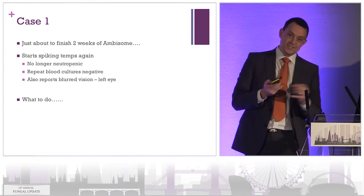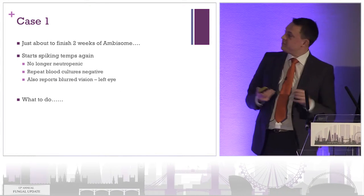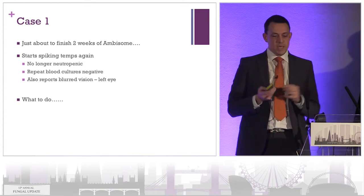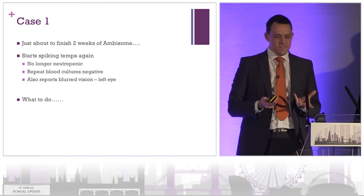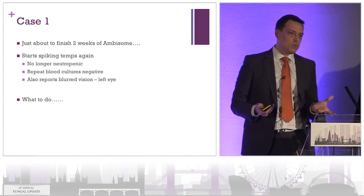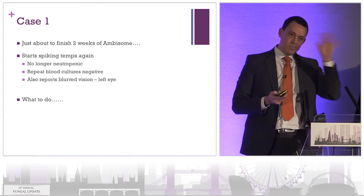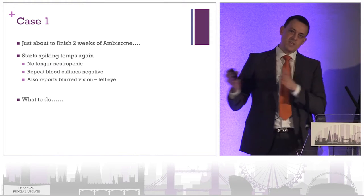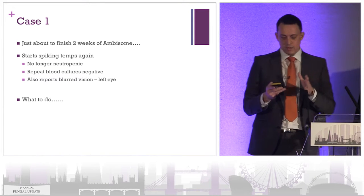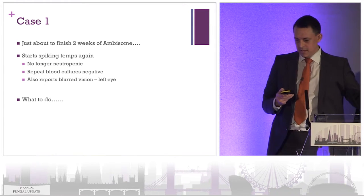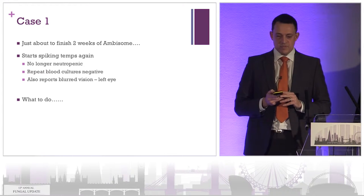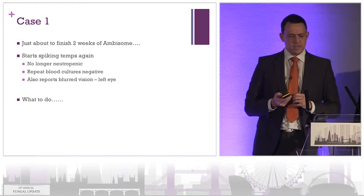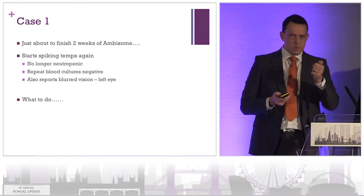He wasn't particularly fine, so it wouldn't make a very good case. He was just about to finish two weeks of AmBisome and was better — his counts had recovered, he was no longer neutropenic — but he starts to spike fevers again. His repeat blood cultures are all sterile, but unfortunately at this point he starts to develop blurred vision in his left eye.